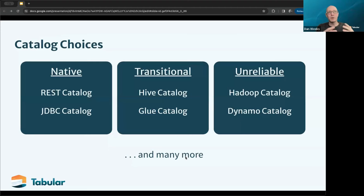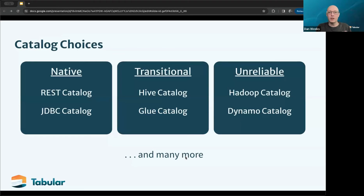I call out six catalog implementations here. These six are ones actually included in open source Iceberg. Some of them, like the REST catalog, can have both open source as well as vendor implementations.